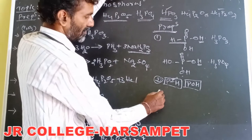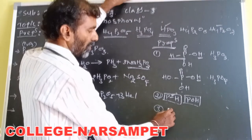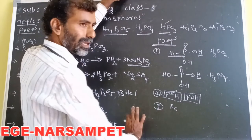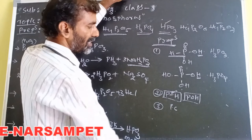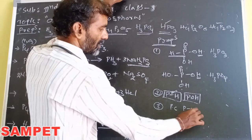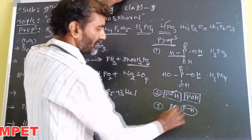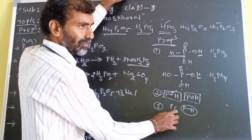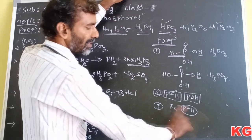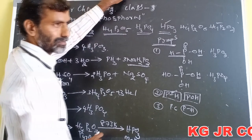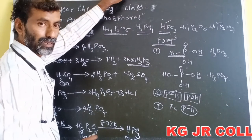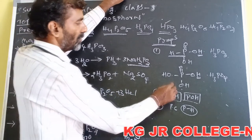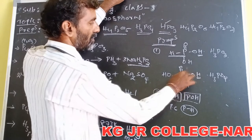Phosphoric series of acids may not have P-H bonds. But they contain only P=O bonds on phosphorus.